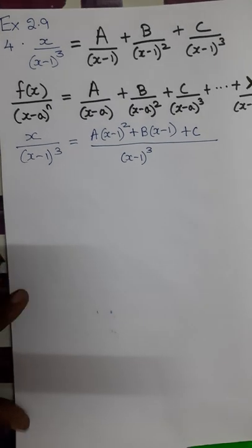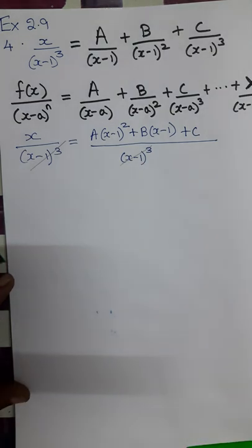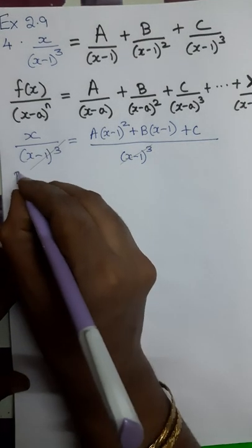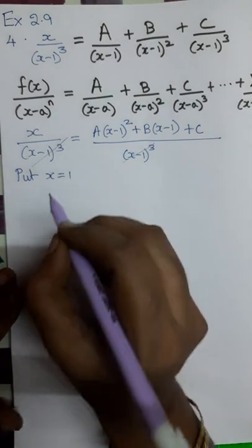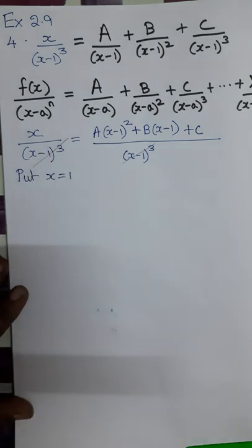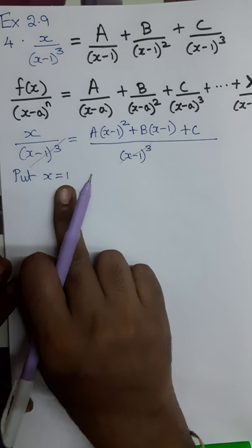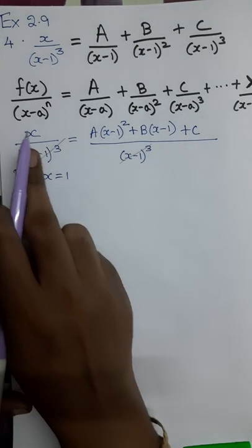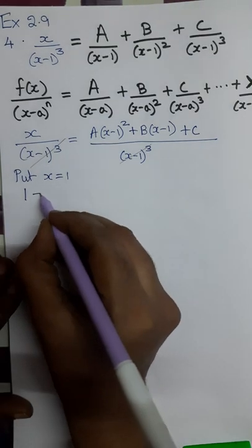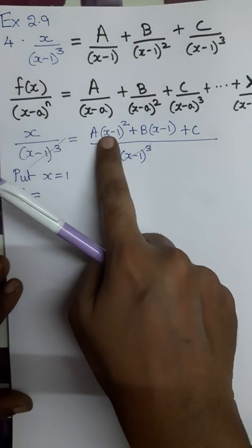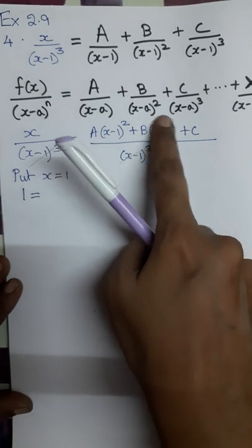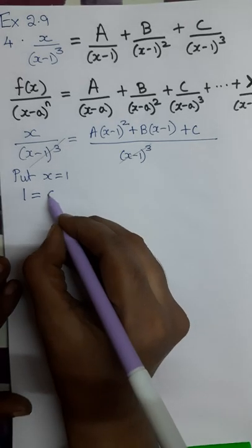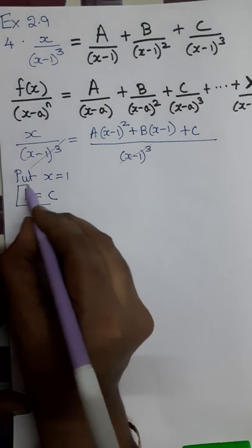Once we reach this step, we can forget about the denominator and focus on finding A, B, and C. The bracket (x minus 1) suggests putting x equal to 1, because 1 minus 1 becomes 0. Substituting x = 1 on both sides: the left-hand side gives 1. On the right-hand side, the first term becomes 0 and the second term becomes 0, so only C remains. Therefore, the value of C is 1.